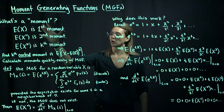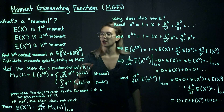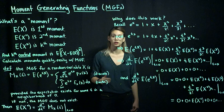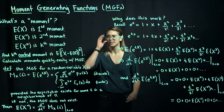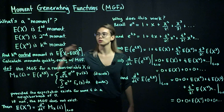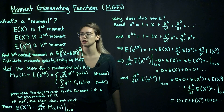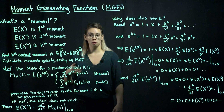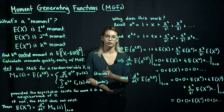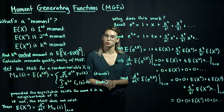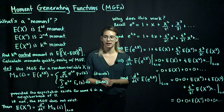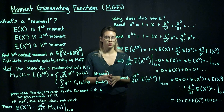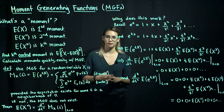So this is what moments are, and it would be nice if we could calculate lots of moments quickly. Instead of having to calculate this expectation, and then this expectation, and then this expectation, it would be nice if we could have a straightforward way to calculate a bunch of them. So what we're going to do is use a moment generating function, or MGF.